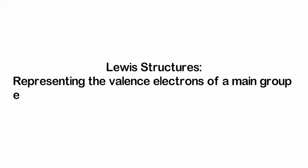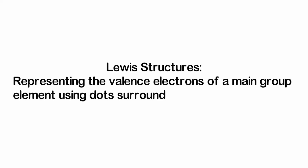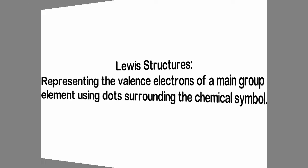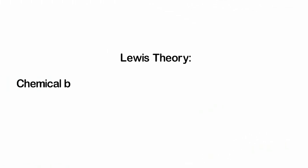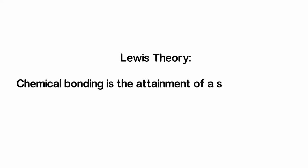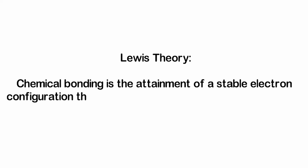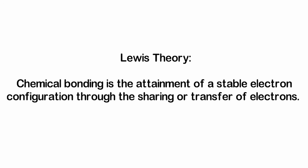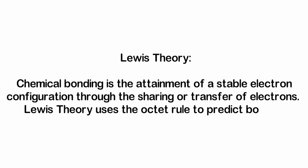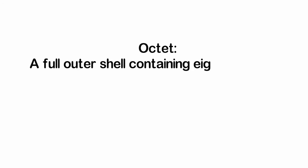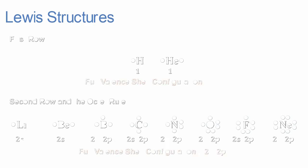We are ultimately interested in valence electrons because they are responsible for much of the chemical behavior of atoms. We use Lewis structures to represent the valence electrons of a main group element using dots surrounding the chemical symbol. Lewis theory is the idea that chemical bonding is simply the attainment of a stable electron configuration through the sharing or transfer of electrons between bonded atoms. Lewis theory uses the octet rule to predict bonding, and an octet is a full outer shell containing eight electrons. This figure shows the Lewis structures for the first ten elements of the periodic table.